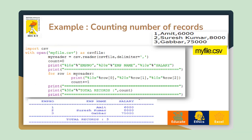Now let us see an example of how to count the number of records. Everything remains the same as previous file handling methods for binary and text files. The only difference is we use the import CSV module and the csv.reader method. This reads the content and passes it to a variable called my_reader, which prints all content from the CSV file in a formatted way. A counter variable increments by one for each record: count = count + 1, to count the total number of records.